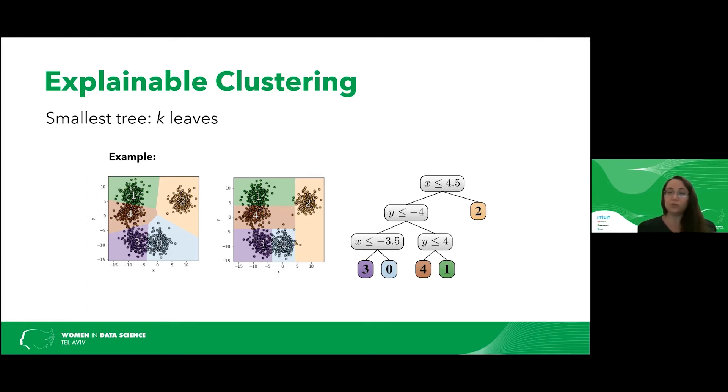Each leaf corresponds to a cluster. And in each inner node, what we see is some feature, in this case, x and y, and some threshold. The decision tree on the right defines the clustering in the middle. We see that the clustering in the middle and the clustering on the left looks pretty much the same, pretty close, which is great because it means that for this specific data set, we can have an explainable clustering, but can we do it for every data set?